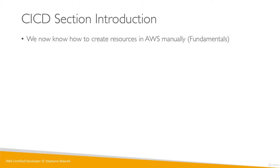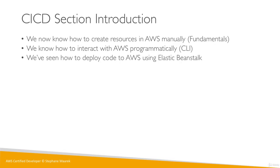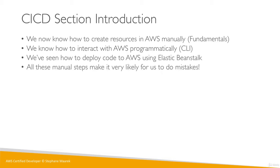We know how to create resources in AWS manually — we've done this in the fundamentals and created everything. We know how to interact with AWS programmatically as well, how to use a CLI, and that's a little bit better. We've seen how we can use Elastic Beanstalk to bring all these things together so we have less manual work to do. But still, when we deploy to Beanstalk, even if we use a CLI, there are still a lot of manual steps. And from personal experience, when there are too many manual steps, there is a high likelihood of making mistakes and errors.